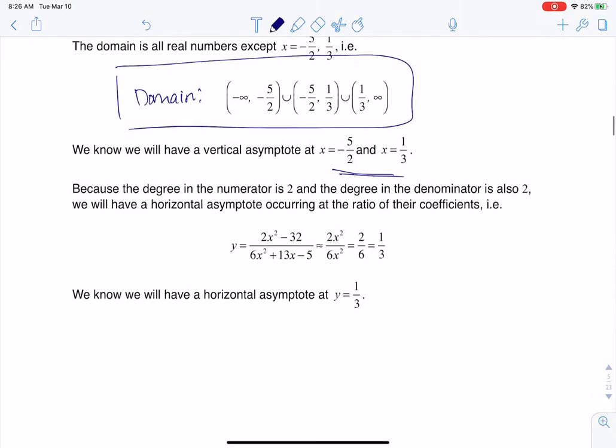But how do we get the end behavior here? Well, if you have a function and you have this rational function, you look at the highest degree terms on the numerator and denominator. So for right now, my highest degree terms, I've got a 2x squared and a 6x squared.